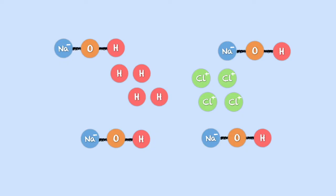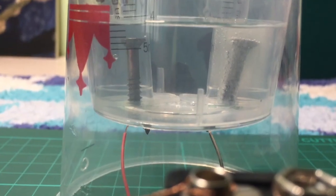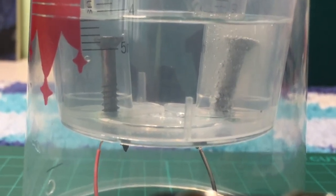Sodium ions bond with oxygen and hydrogen. This makes chlorine atoms and extra hydrogen atoms bond with their own kind and form chlorine and hydrogen molecules and leave the solution as gas. These are the gas bubbles we see in the right syringe.